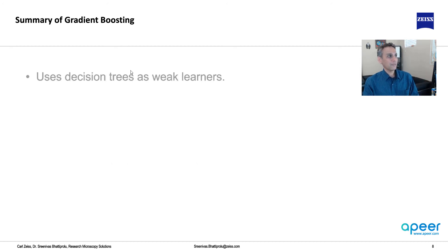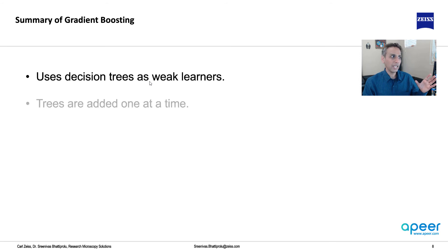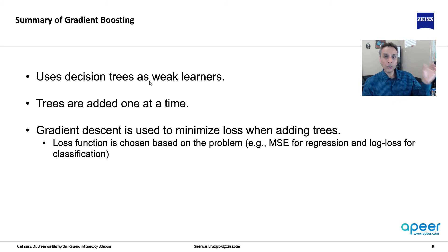The summary of gradient boosting is it uses decision trees as weak learners, just like Random Forest. The trees are added one at a time, and while adding it, you're looking at the loss of previous ones and minimizing the loss, learning from past mistakes. Gradient descent is used to minimize this loss when adding trees. That's why it's gradient boosting. What loss function depends on your problem - mean squared error for regression, log loss for classification, and many other loss functions.